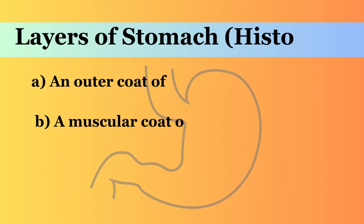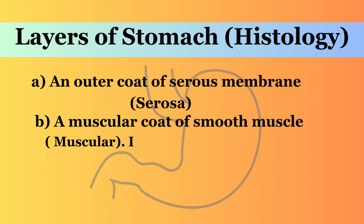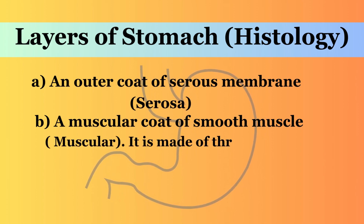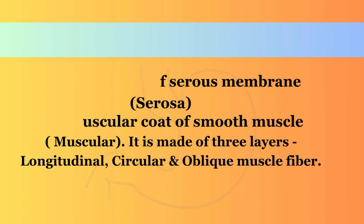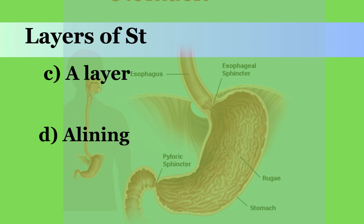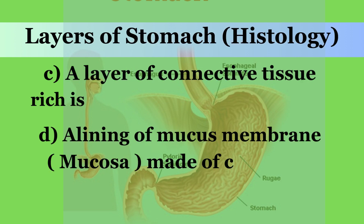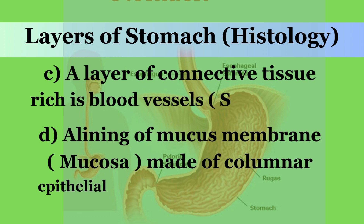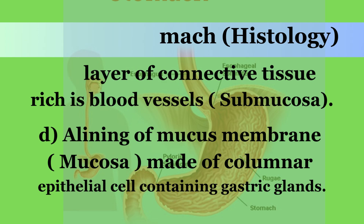Layers of stomach — histology: a. An outer coat of serous membrane, serosa. b. A muscular coat of smooth muscle, muscularis — made of three layers: longitudinal, circular, and oblique muscle fibers. c. A layer of connective tissue rich in blood vessels, submucosa. d. A lining of mucous membrane, mucosa — made of columnar epithelial cells containing gastric glands.